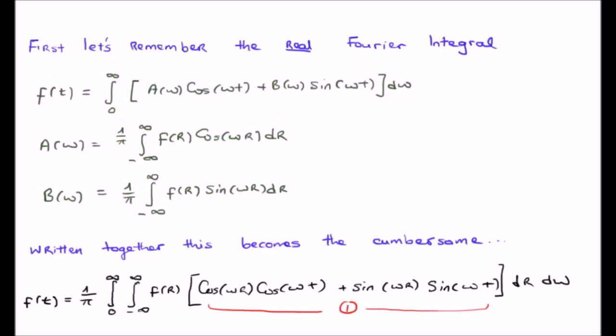We still have the constant one over pi out front, as I mentioned a moment ago. We have the integral going from 0 to infinity still. The infinite integral here has come from the definitions of A of omega and B of omega.